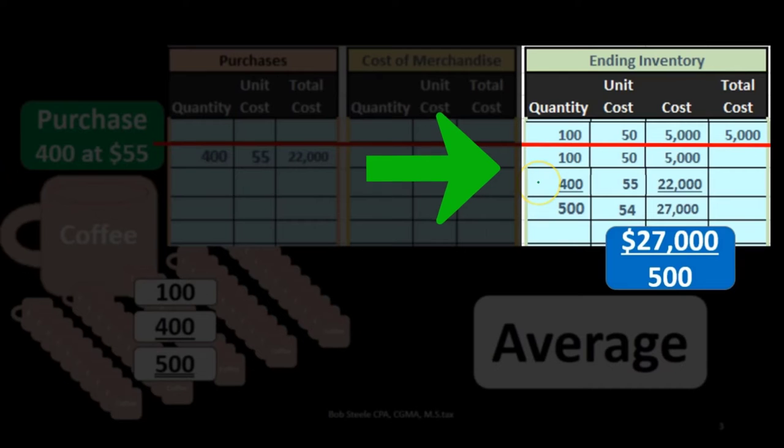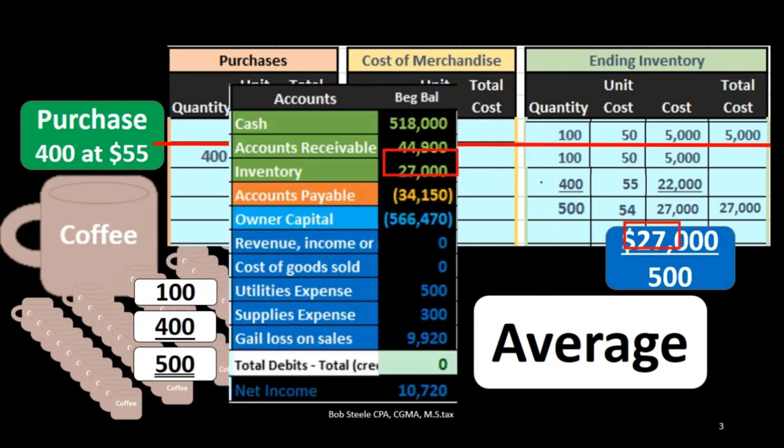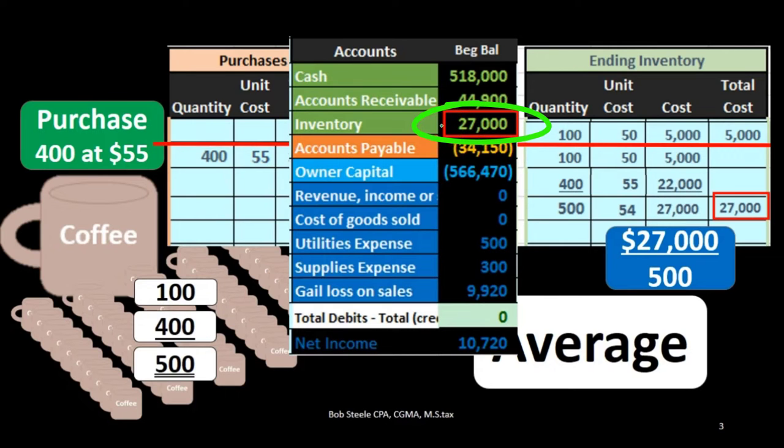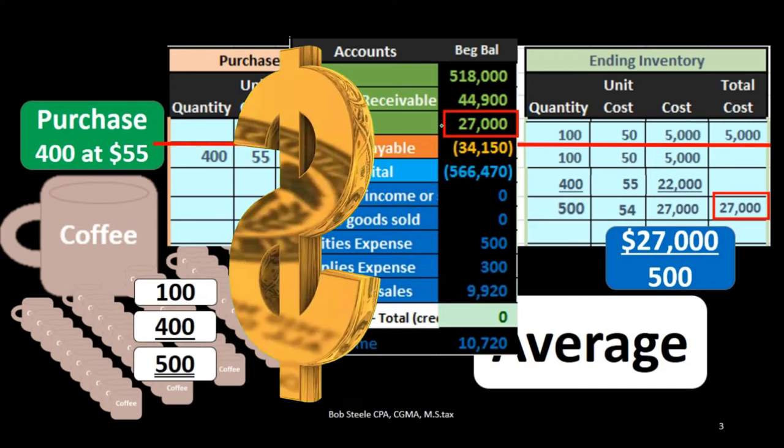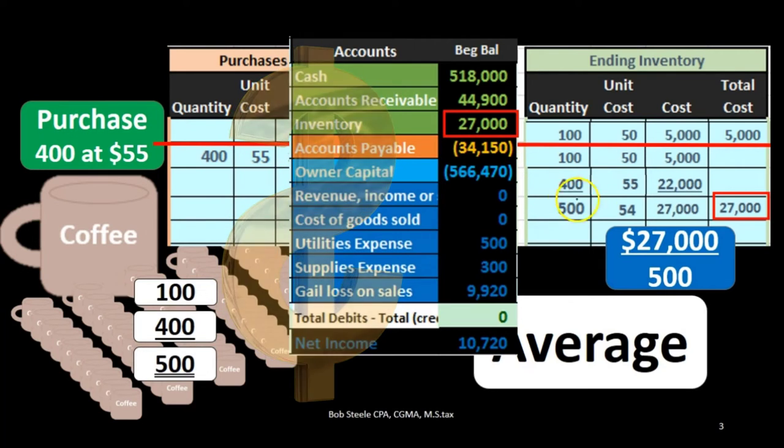Why? Because there's a lot more of them at that 55. That number then would be on the trial balance or the balance sheet. This is the dollar amount representing those 500 units that we have. Average cost for any of those units now being $54.